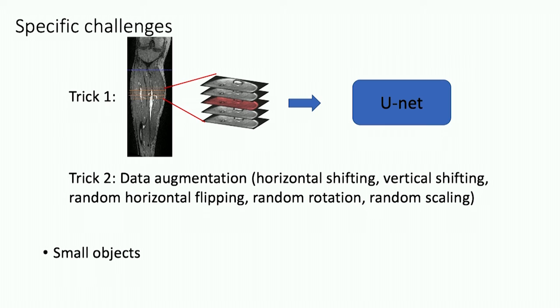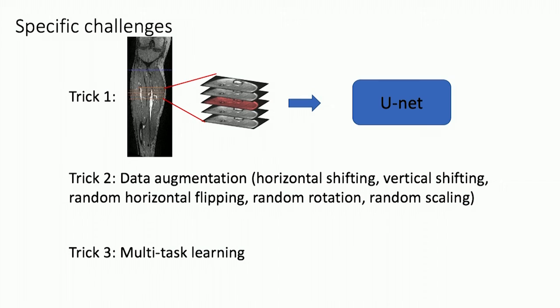To tackle the second problem, we applied some data augmentation, which contains horizontal and vertical shifting, random flipping, rotation, and scaling to create more data and enlarge our training set. As for the small object problem, we were inspired by some previous work relevant to this topic, suggesting that multi-task learning can achieve higher accuracy.